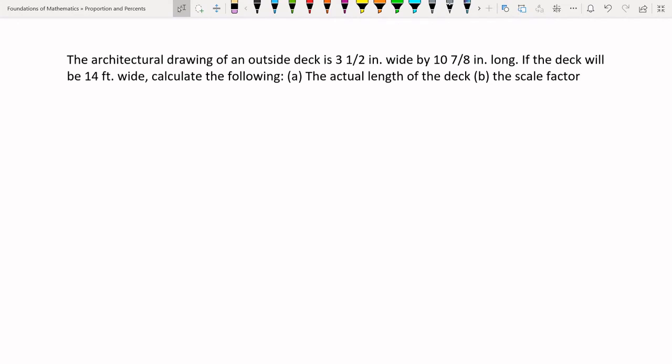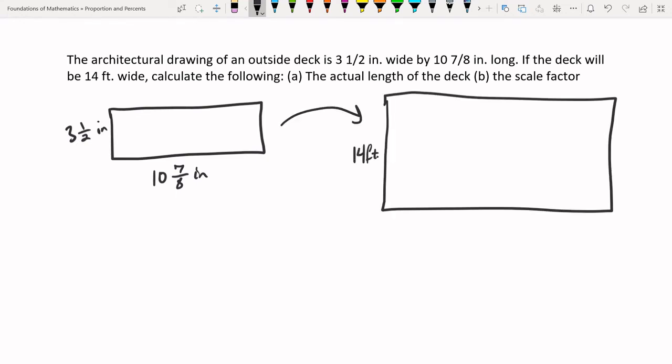An architectural drawing of an outside deck is 3 and a half inches wide by 10 and 7 eighths inch long. If the deck will be 14 feet wide in the actual building of it, what's the actual length of the deck? And what's the scale factor? So the drawing is going to be a rectangle. It's going to be 3 and a half inches wide and about 10 7 eighths inch long. And this is going to go to 14 feet wide and then X feet long.